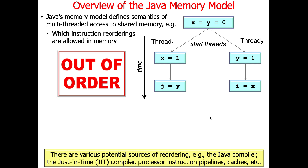Here are some of the different sources of reordering: the Java compiler can reorder things, the just-in-time compiler can reorder things, the processor instruction pipelines can reorder things, and the instruction caches can reorder things. You can get reordering all over the place.